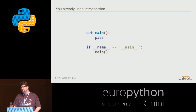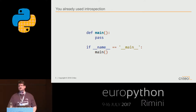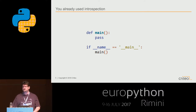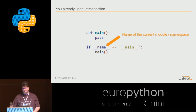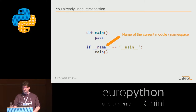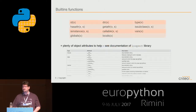In fact, I was already using introspection without knowing it. You probably recognize this snippet of code - it's the code used to separate the code that should execute when you run your module directly versus when you import it. The difference is made by looking at the special attribute called __name__, which is the name of the current module or namespace. So by using that, I was in fact using introspection.